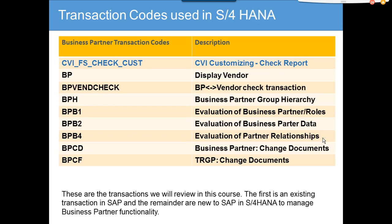BPB4 handles the partner relationship between the business partner, the vendor, and the company code data of the vendor. Then you have Business Partner Change Documents, which shows what changes have been done. In some cases you don't need to activate changes because it adds a lot of table data in the CDPOS and CDHDR tables.